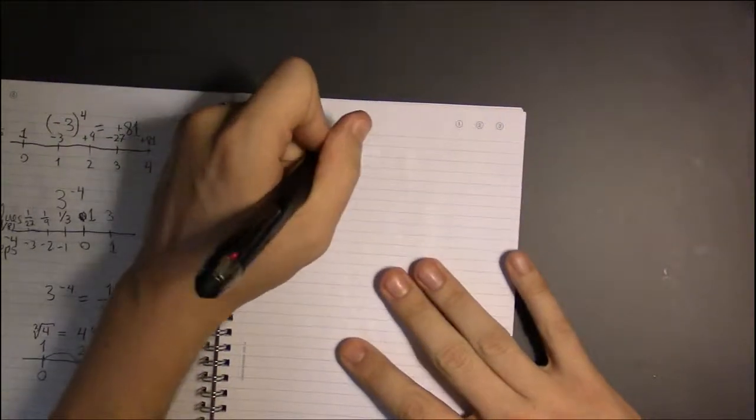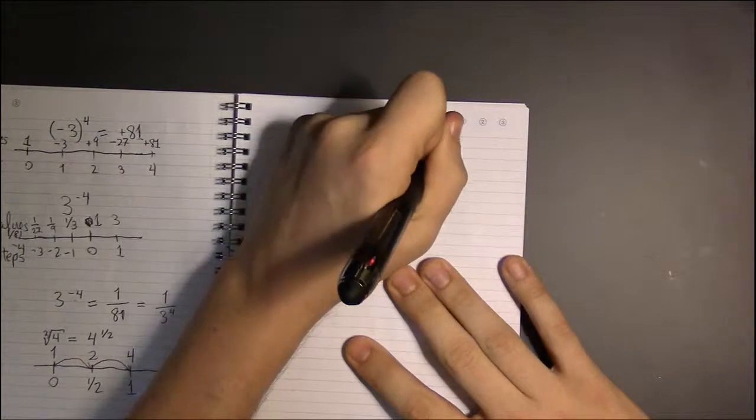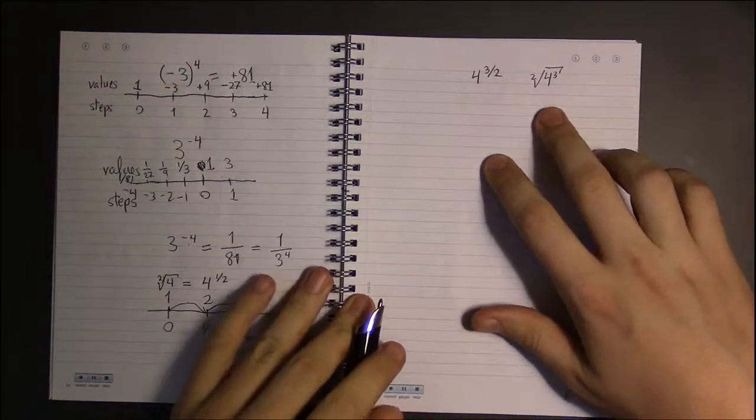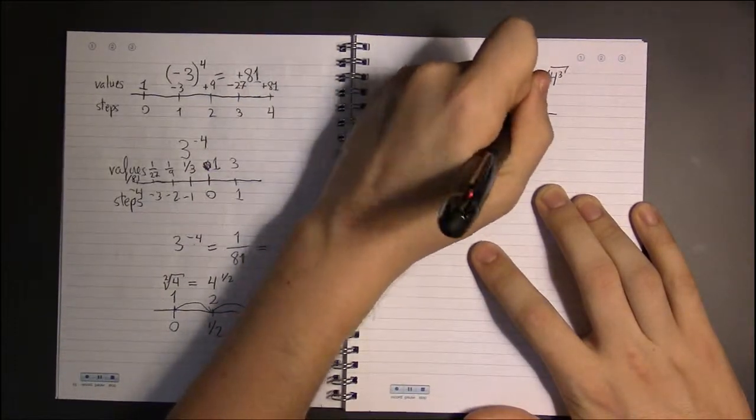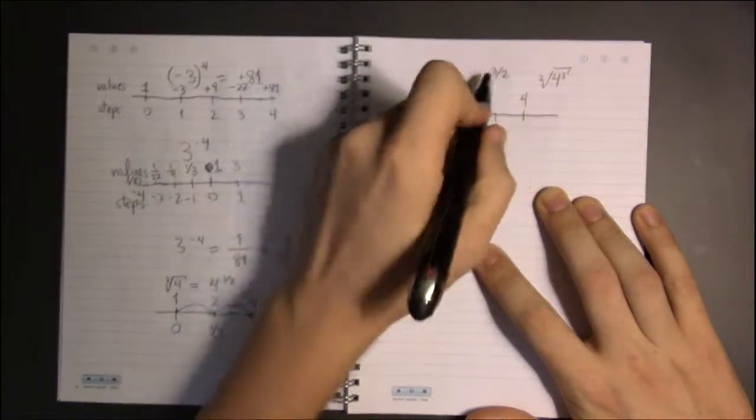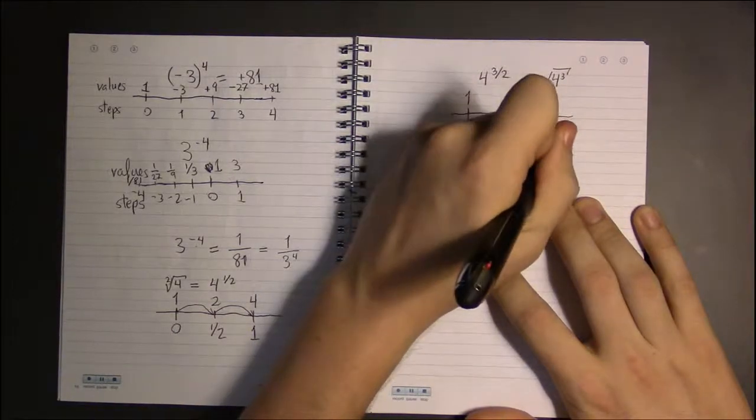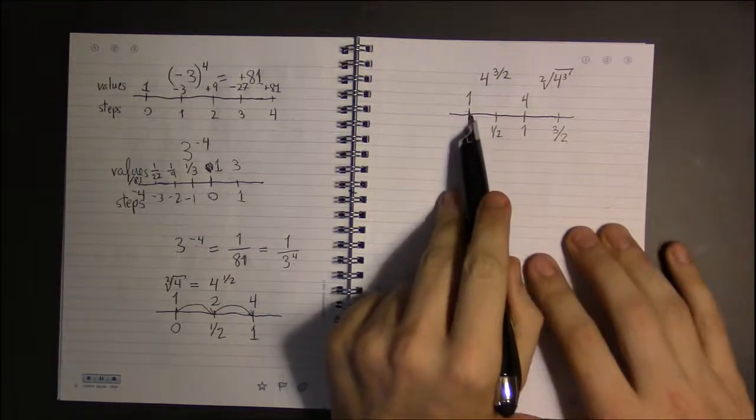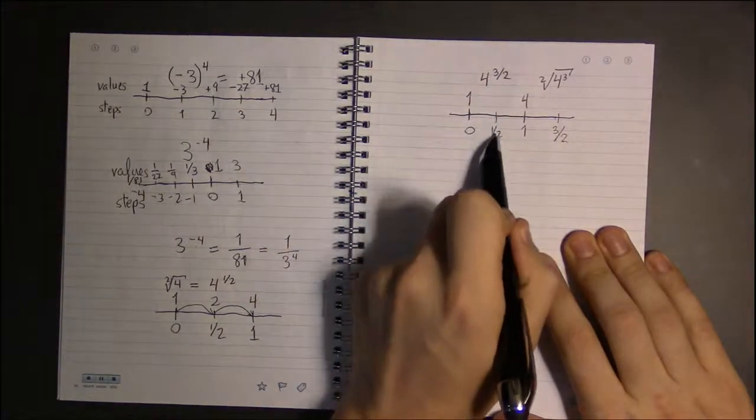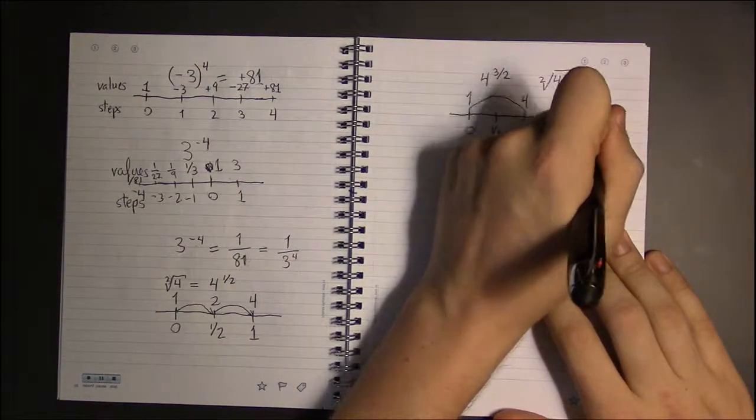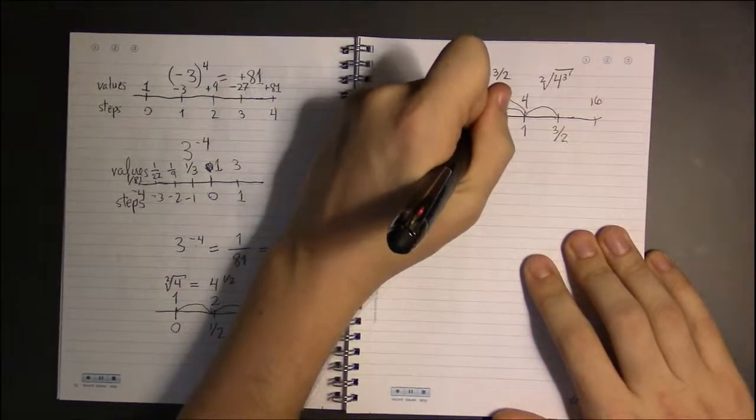And we can even do things like four to the three-halves. Which, in radical notation, would be just square root of four cubed. So three-halves, that's one and one-half. So we're going to take, we're going to go, not in steps, go from step zero to step one. We're going to be stepping, taking half steps here. And we're going to take three of these half steps. So rather than going just one to four, and then four to sixteen, we're going to be doing three of these little half steps.